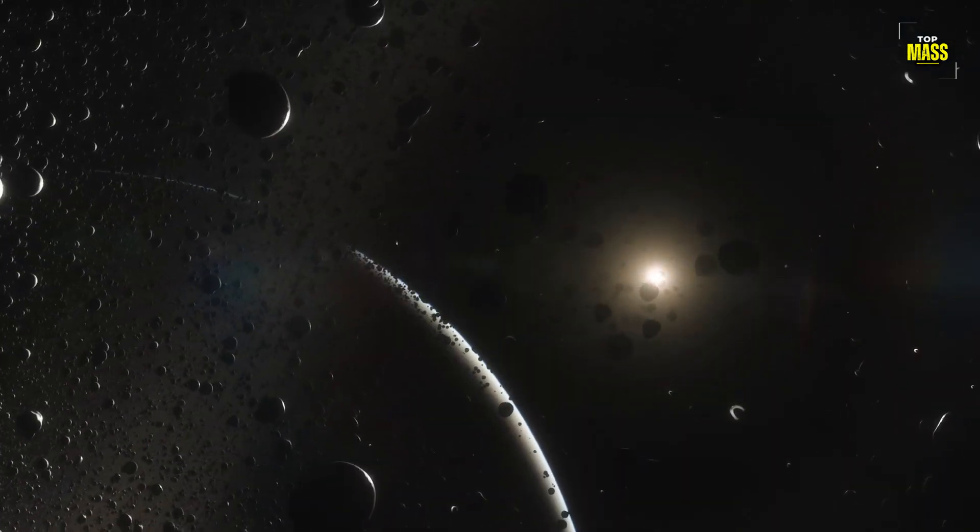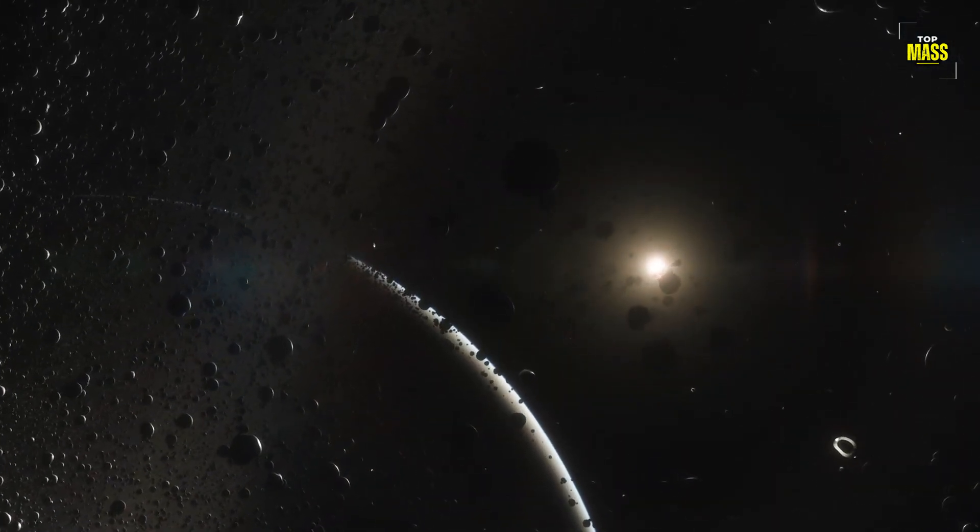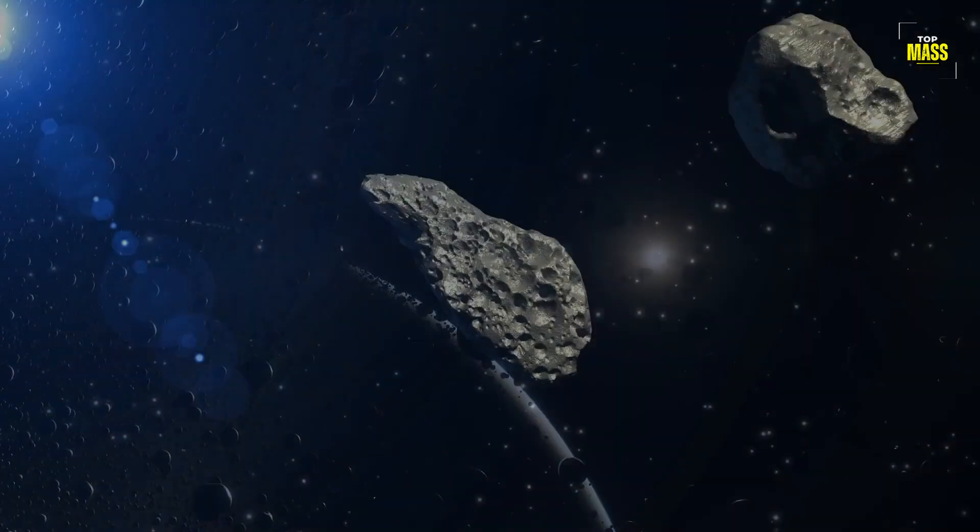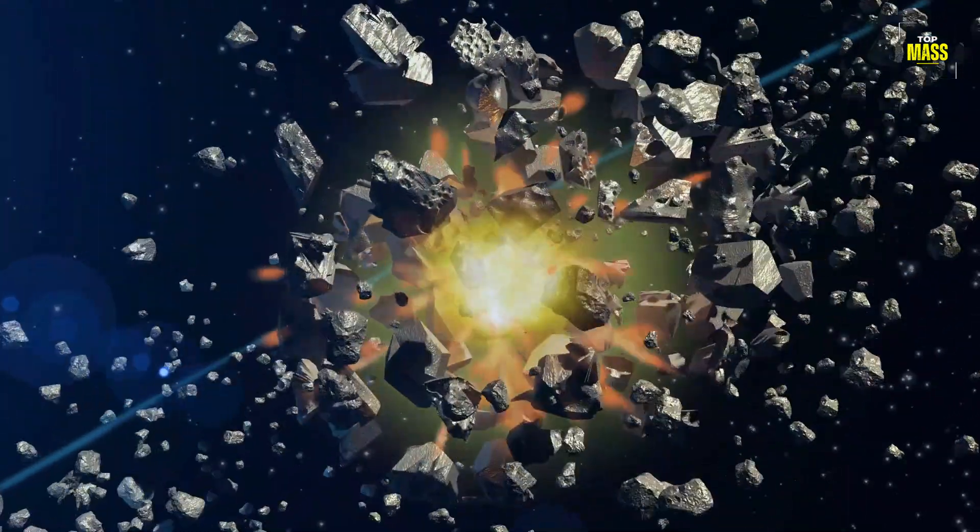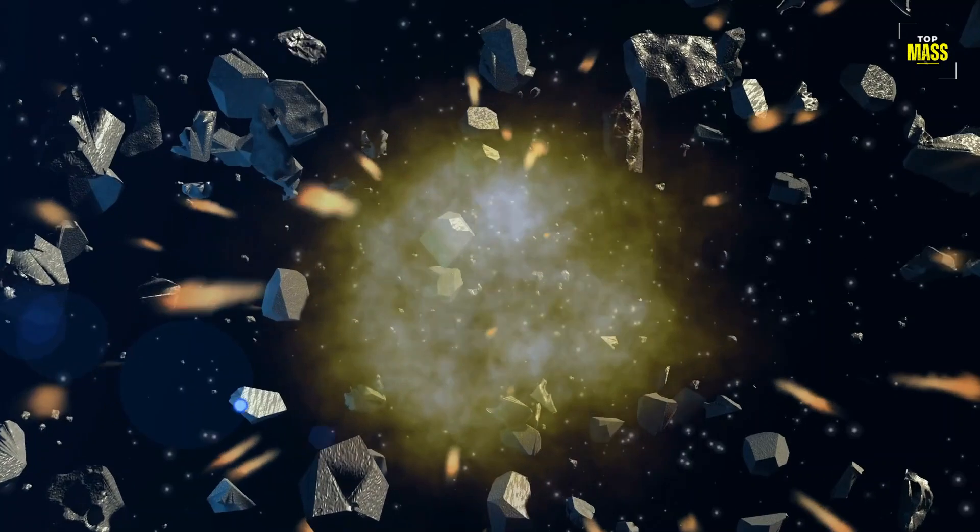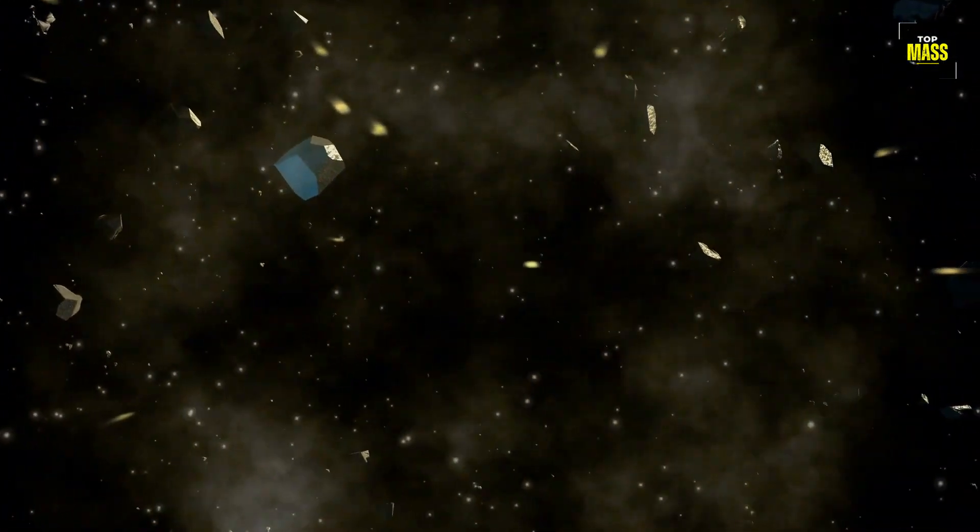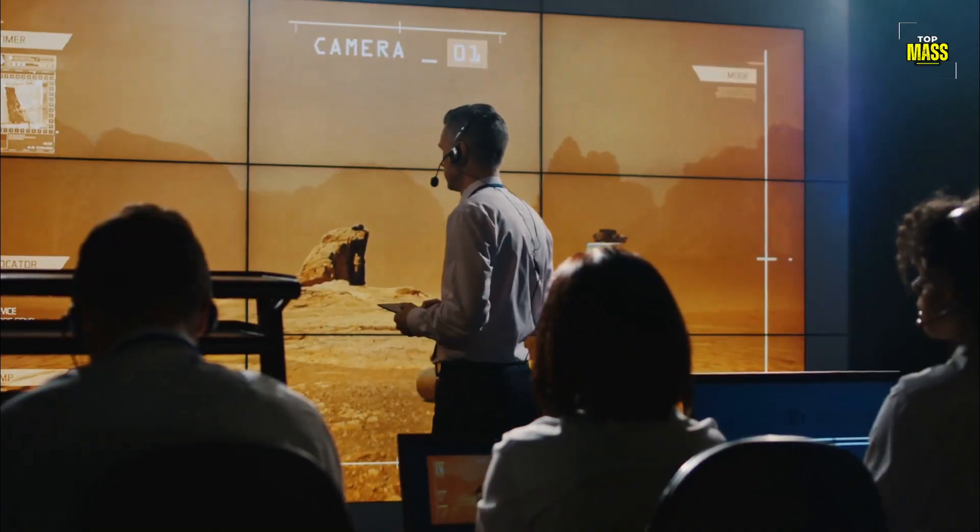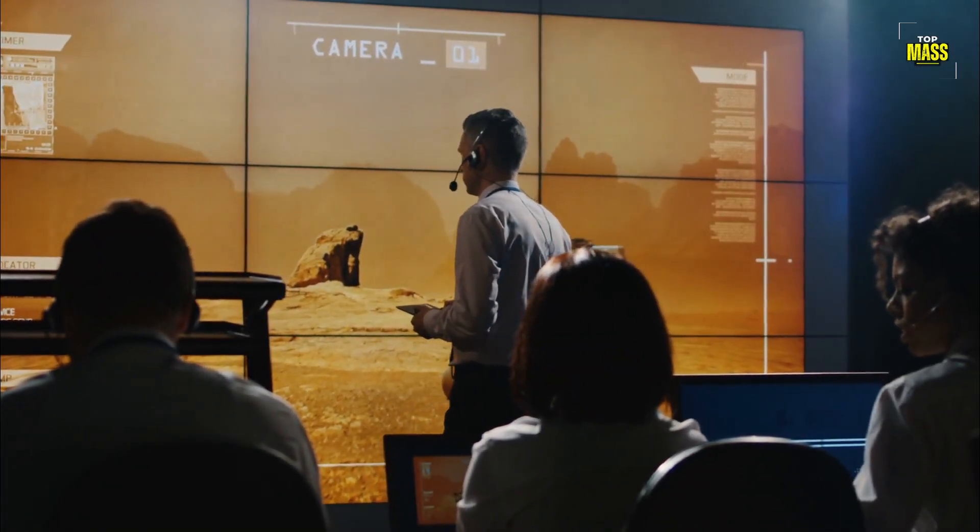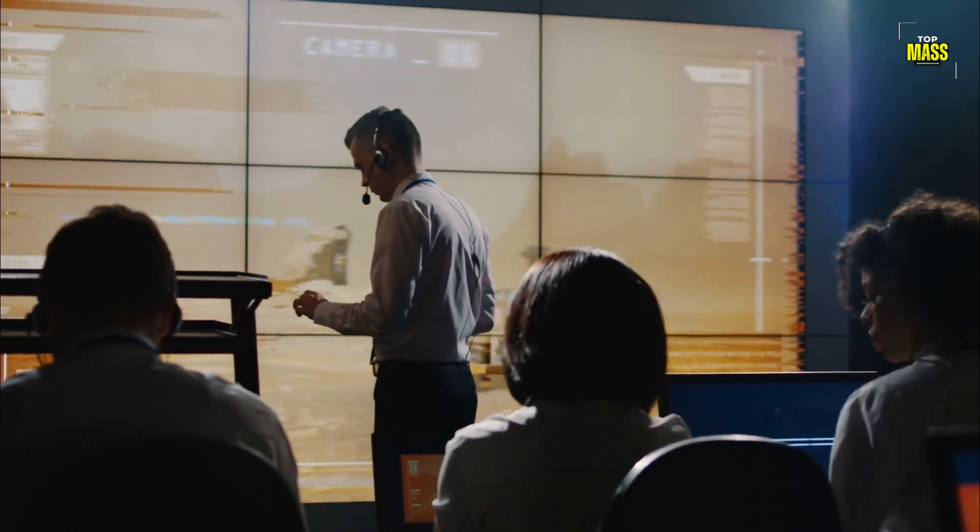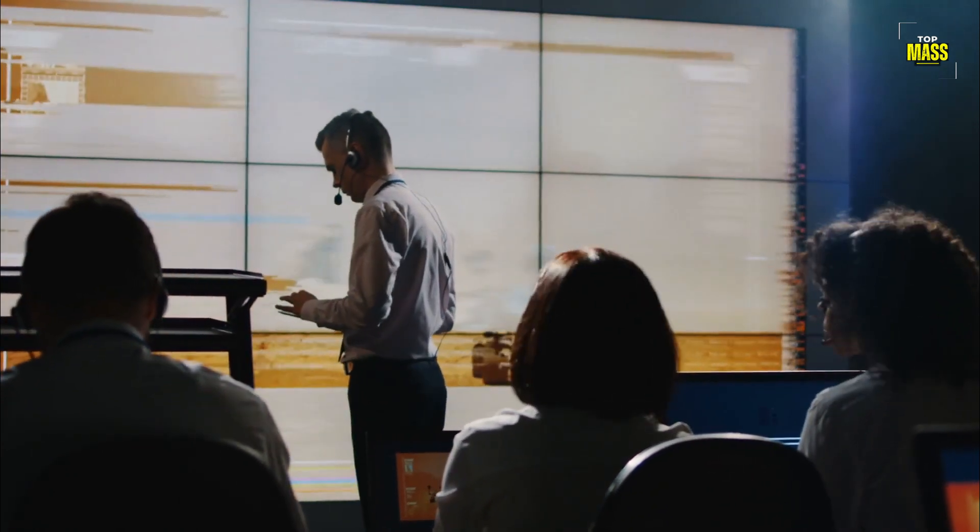While many of these pose no threat to life on Earth, others can be potentially dangerous. At high velocities, often several kilometers per second, even small pieces of debris can cause significant damage if they collide with a spacecraft or satellite. As such, tracking and monitoring this space junk has become an increasingly important task for scientists and engineers alike.